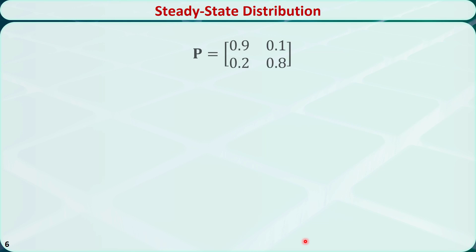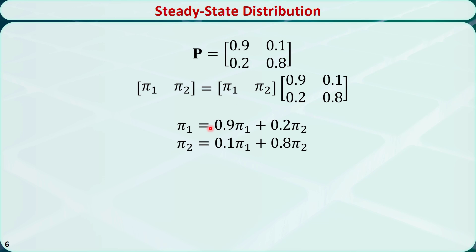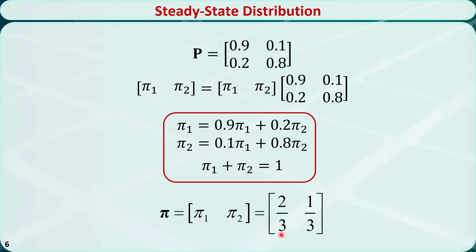Let's find the steady state distribution for the toothpaste example by applying the steady state distribution property: the steady state distribution equals the steady state distribution times the one-step transition matrix. From this equation we get two equations, plus the third equation that the elements of the steady state distribution sum to 1. Solving this system, we find pi 1 equals 2/3 and pi 2 equals 1/3.